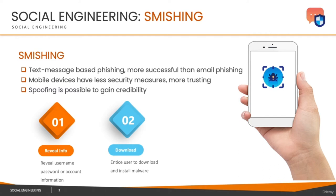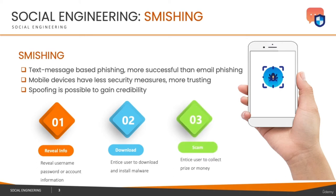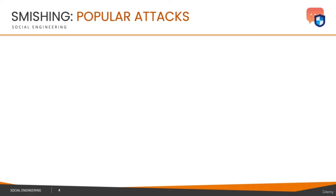Once you install that malicious application on your mobile phone, it gets a lot of access. Remember, whenever you install any application you agree to a long list of things the application can do, and we don't actually go through the fine print. So if the application is malicious, it can get a lot of information from your mobile phone and send it remotely to the attackers. The third objective could be to scam users by engaging in communication to later use social engineering to trick you into revealing confidential information.